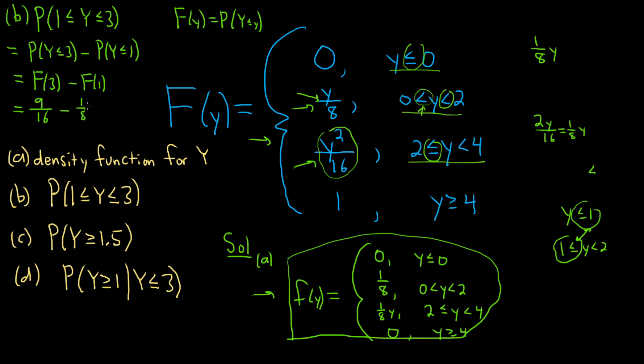So to subtract these, we can find a common denominator. Multiply this by two over two. So this is nine sixteenths minus two sixteenths. That's going to give us seven sixteenths, boom, one down. The answer here is seven sixteenths. That'll be the answer for part B.